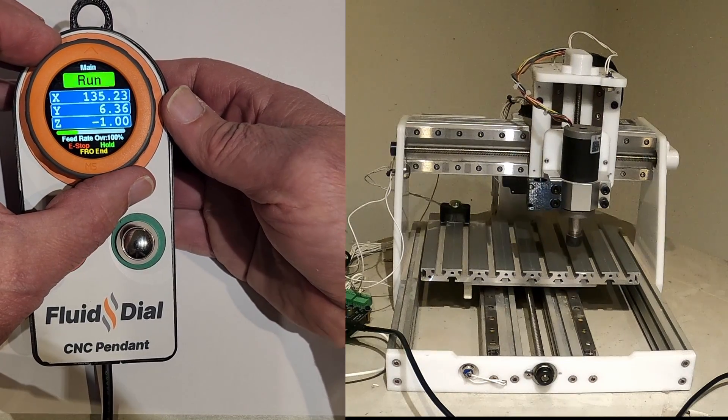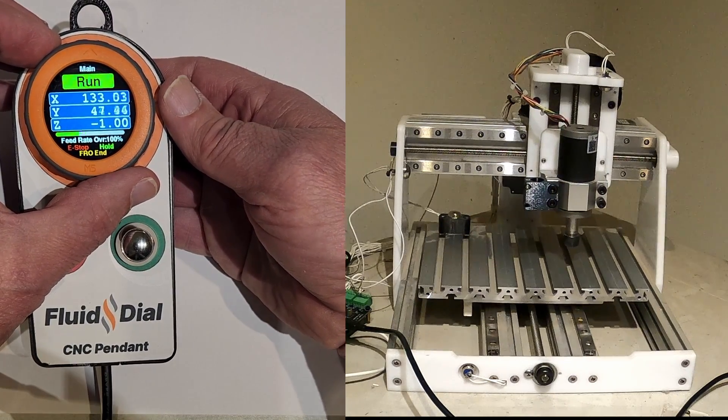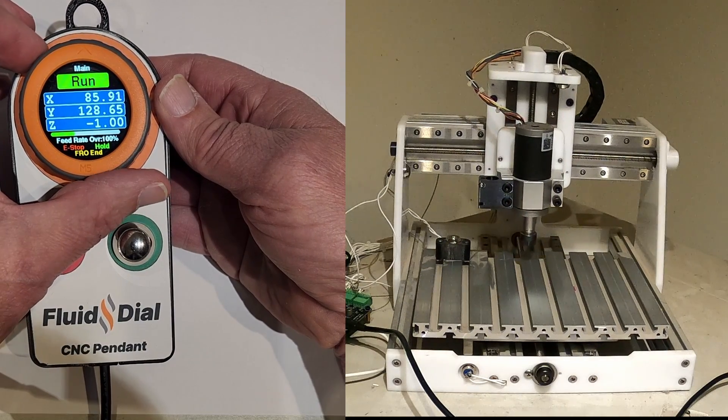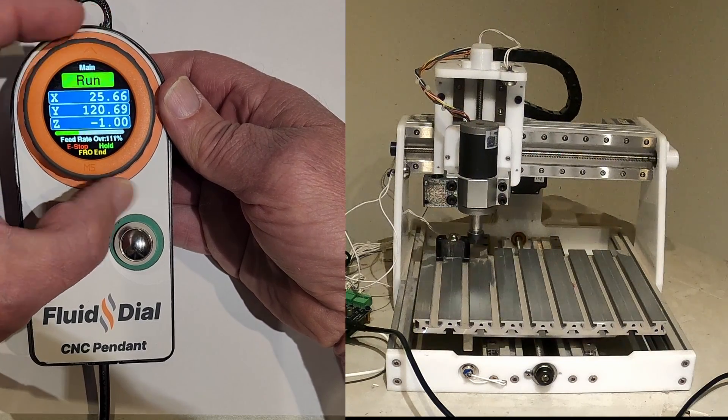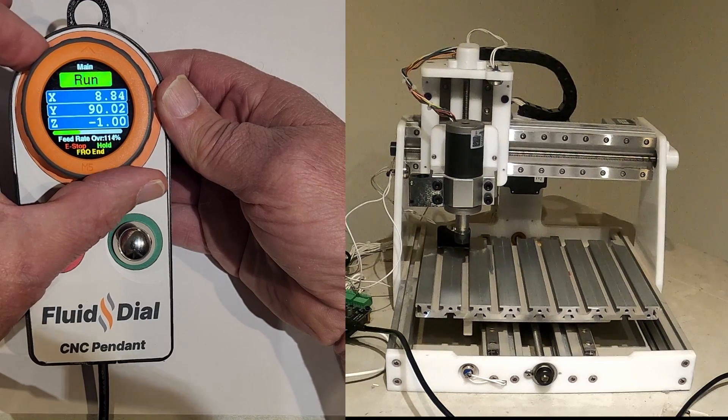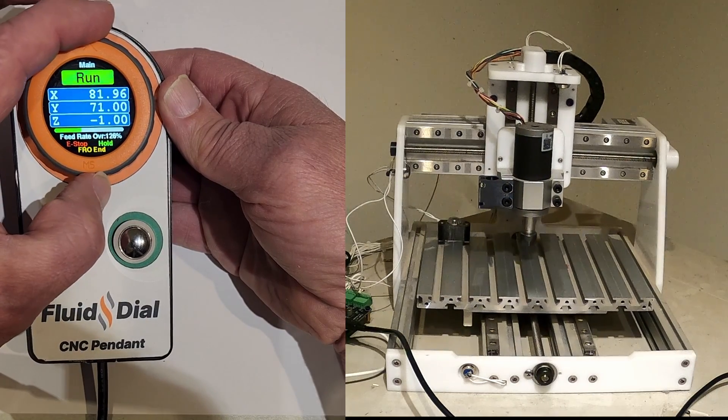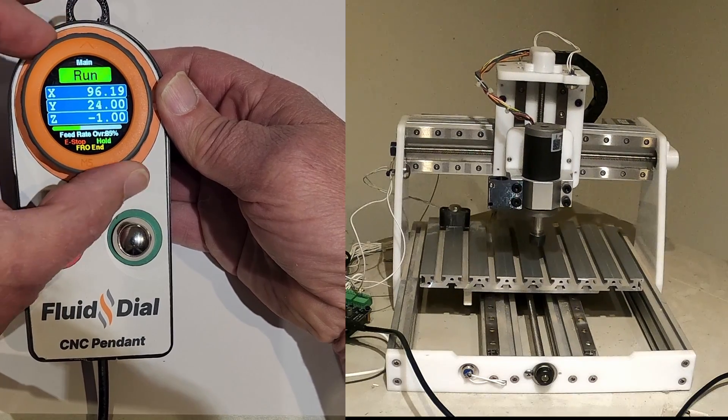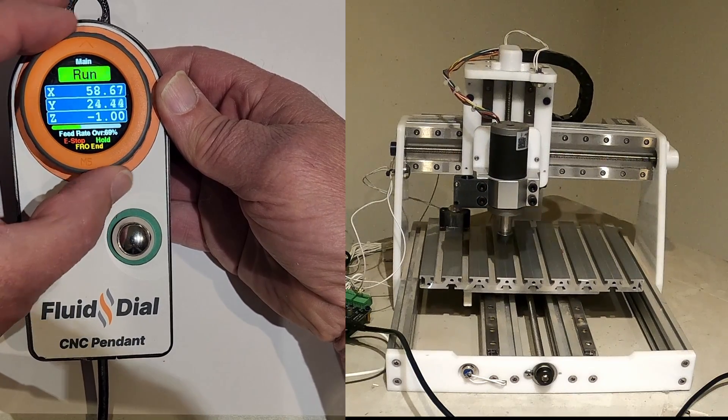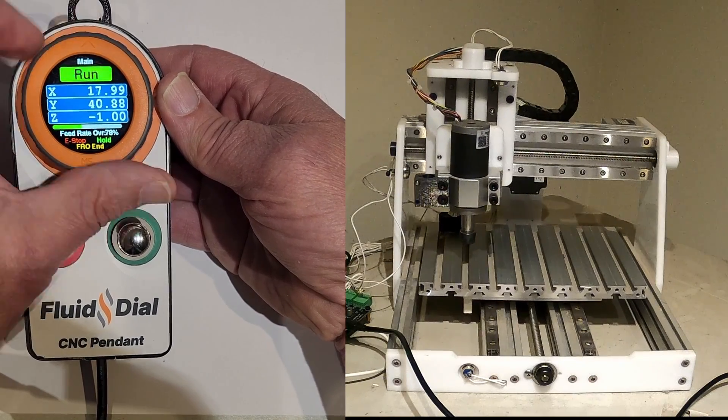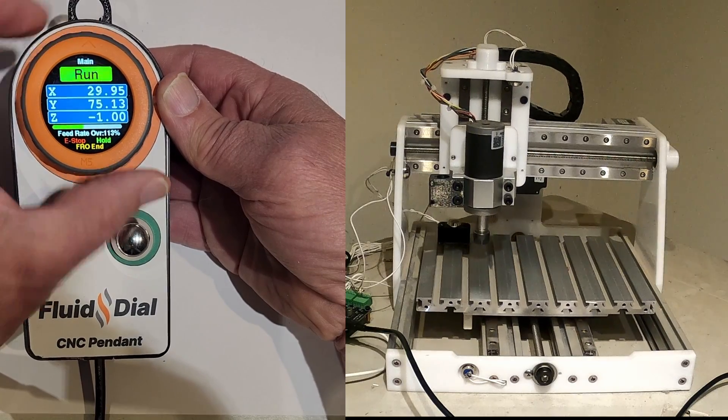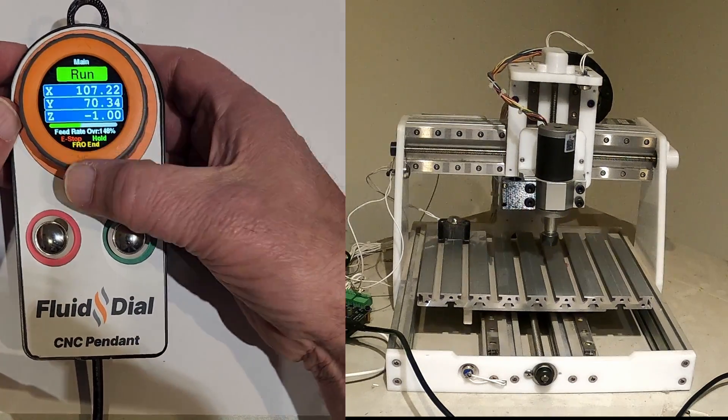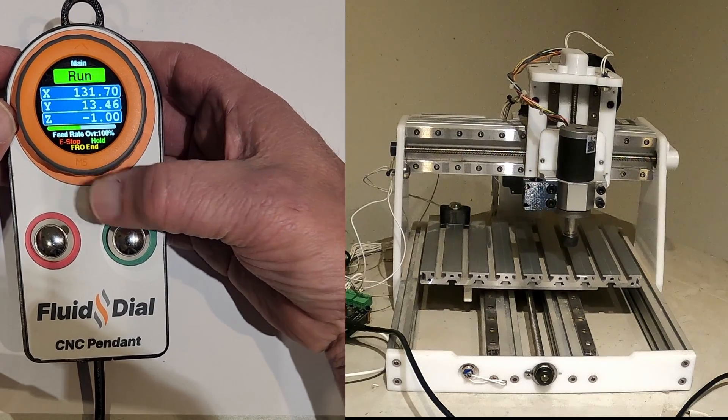I can also adjust using the dial, the feed rate override. You can actually hear it when it changes. I can slow it way down. I can speed it way up. And if I want to return to the original feed rate, I just click that.